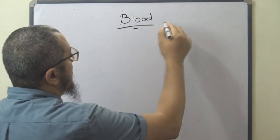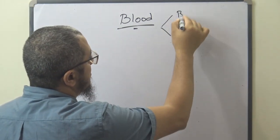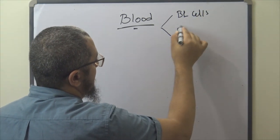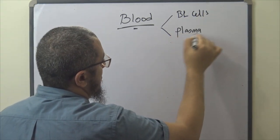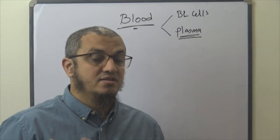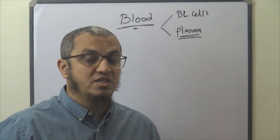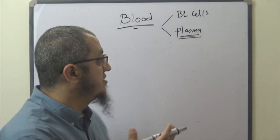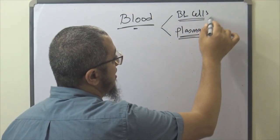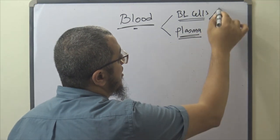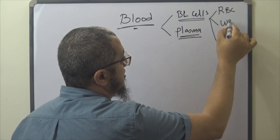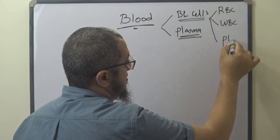Blood contains two things: blood cells and plasma. Plasma contains fat, enzymes, protein, carbohydrates — everything in the plasma. But we have to know about blood cells. What blood cells do we have? We have three blood cells: RBCs, white blood cells, and platelets.